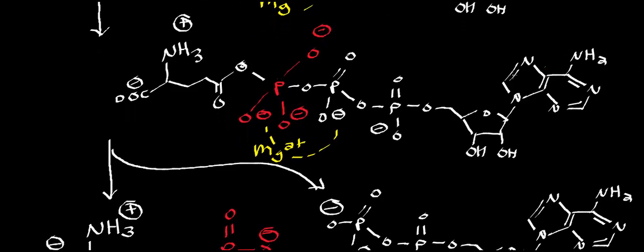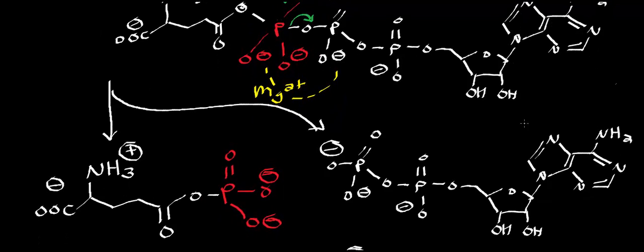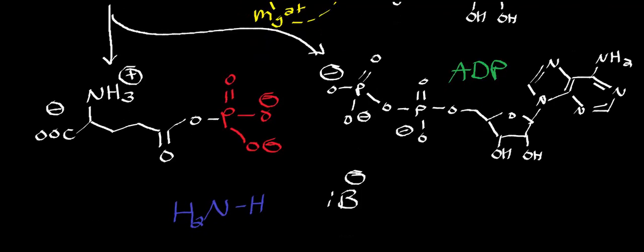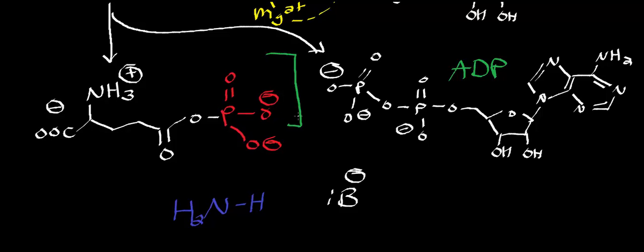We have this trigonal bipyramidal intermediate that's still stabilized by that magnesium ion. In this step of the mechanism, the lone pair is going to cause the collapsing of the trigonal bipyramidal intermediate as the phosphorus oxygen double bond is reformed. The leaving group in this case is going to be adenosine diphosphate, so this molecule that you see over here is our leaving group, ADP.